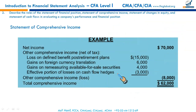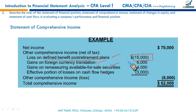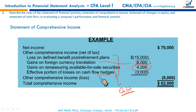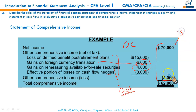The contents of OCI include: loss on defined benefit post-retirement plans, gains on foreign currency translation (distinct from transaction gains), unrealized gains and losses on available-for-sale debt securities, and the effective portion of cash flow hedges. These transactions are so unique they cannot be reported on the income statement and are reported separately in OCI. Combining net income from the income statement and the net of other comprehensive income gives the statement of comprehensive income.